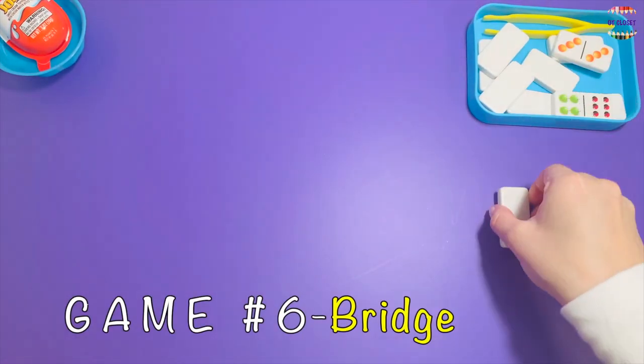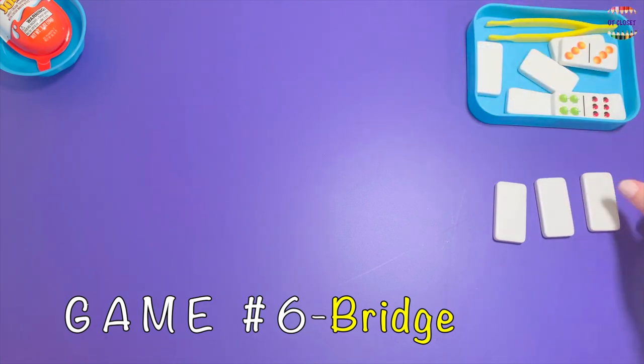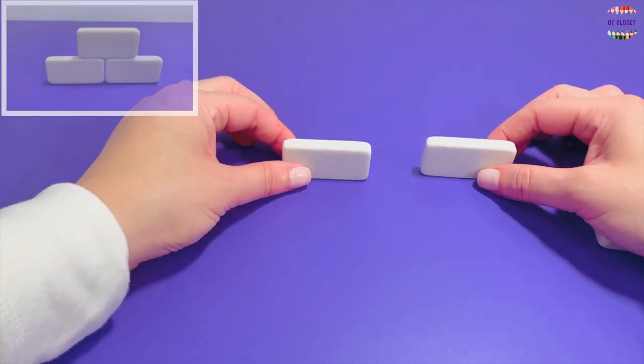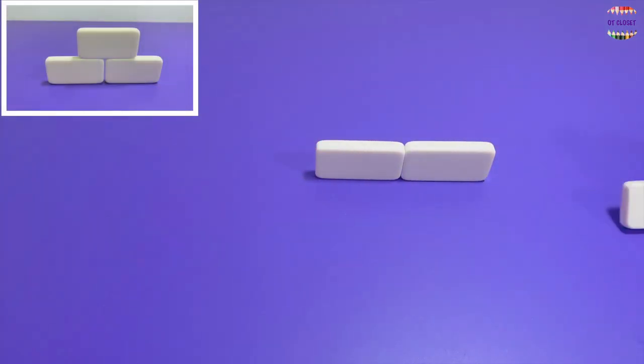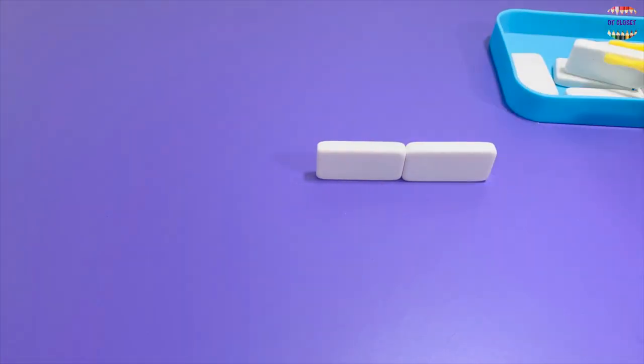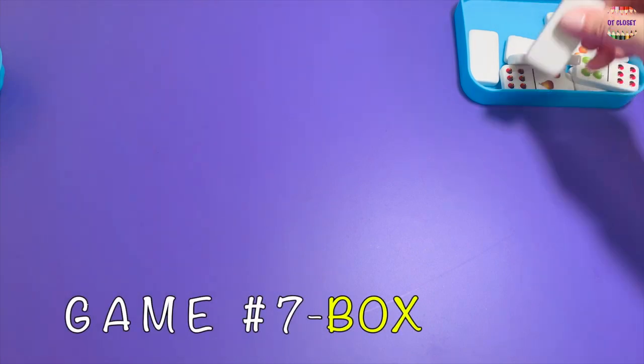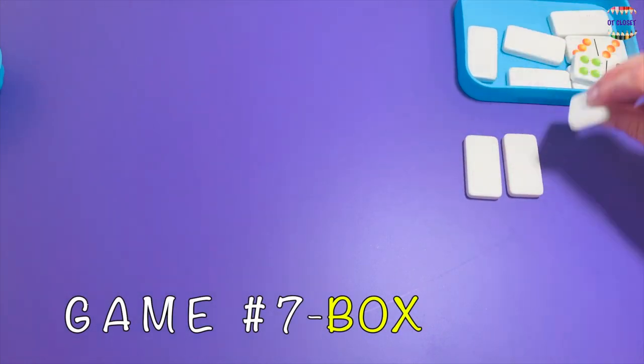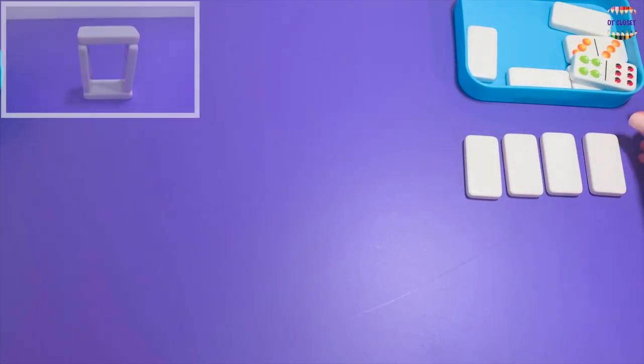Game number six: get three dominoes to build a bridge. Use the tweezers to clean them up. Game number seven: get four dominoes to build a box.